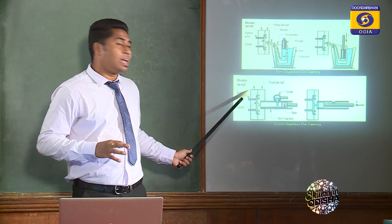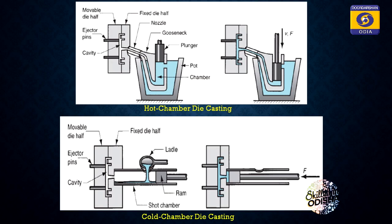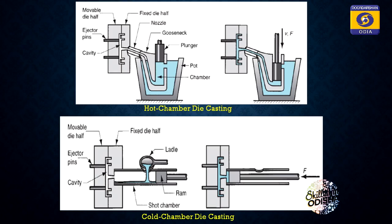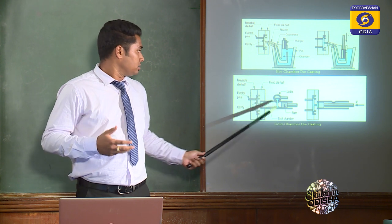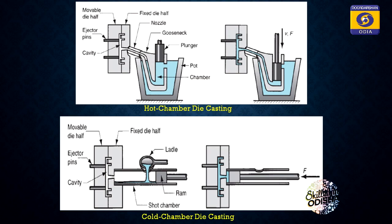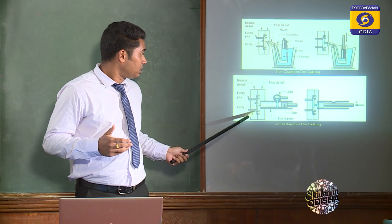Same as in Hot Chamber, two mold halves are used here — the left one is the movable die half and the right one is the fixed die half. These two die halves create the mold cavity. After pouring the molten liquid metal, the plunger moves towards the left side horizontally and injects the metal with very high pressure to fill the mold cavity.